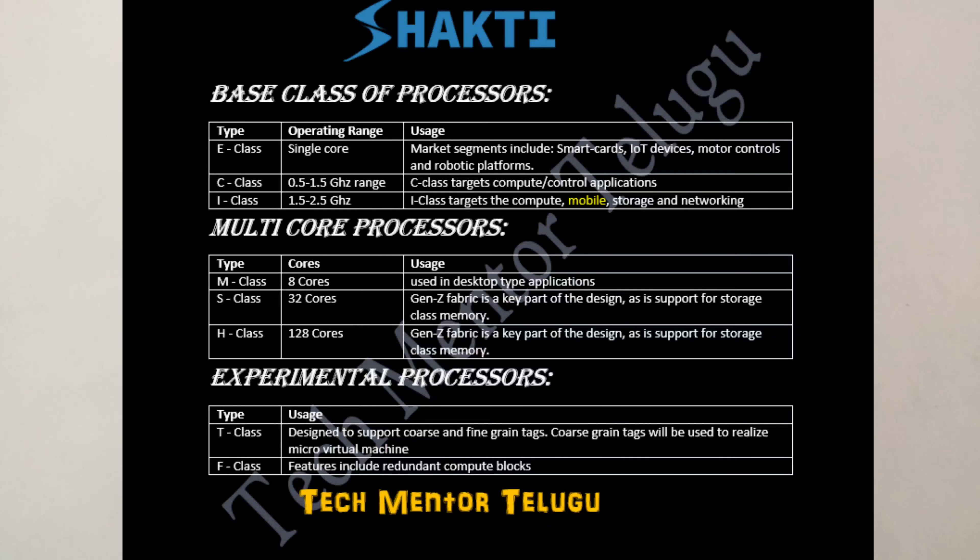E-class is a single-core processor, suitable for IoT devices. C-class and I-class are different processors. I-class has an operating range of 1.5 to 2.5 GHz. For comparison, Snapdragon processors run at 2.6 GHz. I-class operates in the 1.5 to 2.5 GHz range.